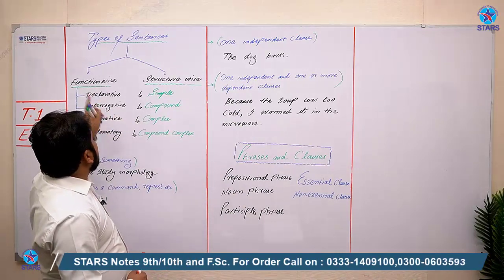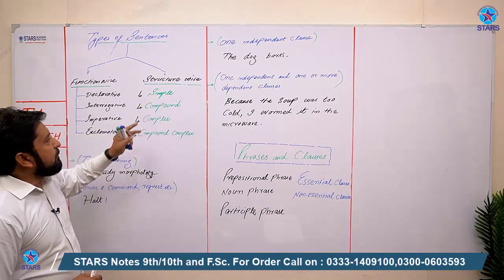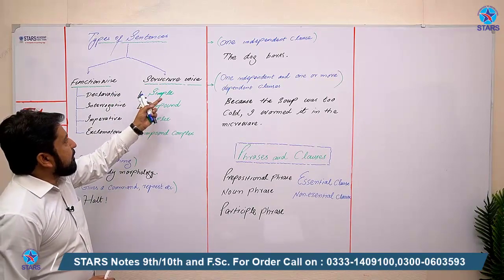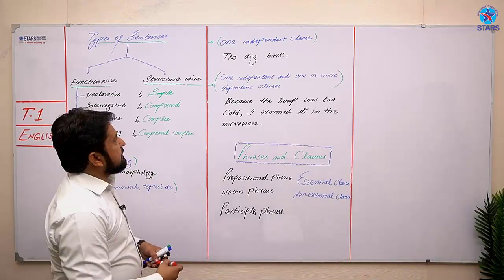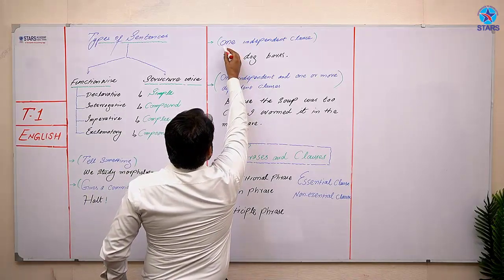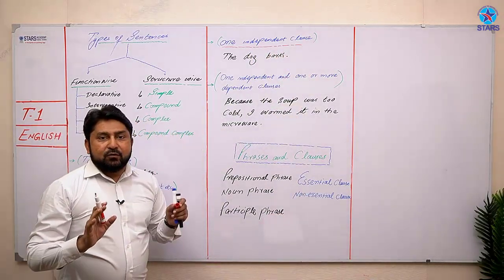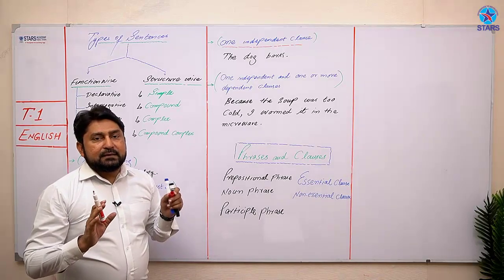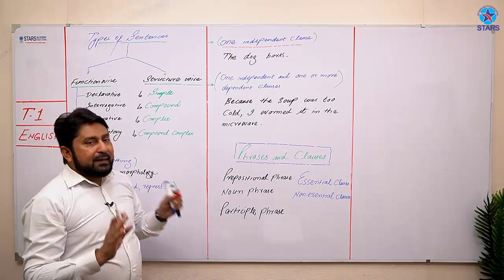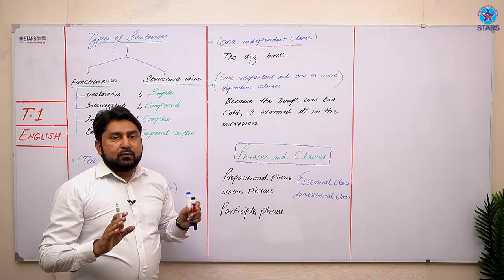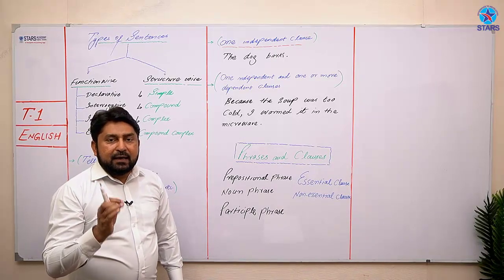Humne function wise mein 4 mein se 2 points discuss kiye with examples. Ab hum structure wise mein badhte hain. Structure wise mein simple type of sentence kaisa hota hai — uski example dene se pehle main uski identification discuss karta hoon. Simple sentence woh hota hai jisme one independent clause hoti hai — a single statement with complete sense or meaning, jise kisi aur cheez ki zaroorat na ho.